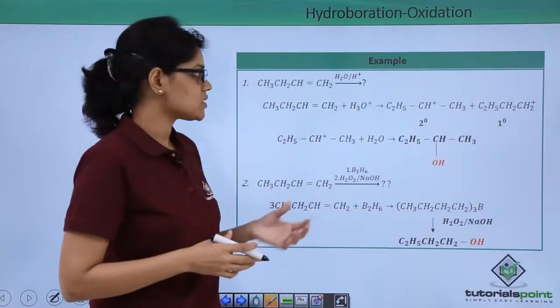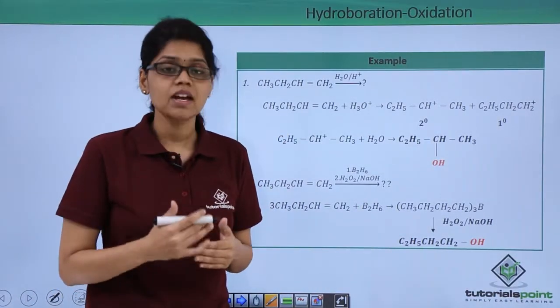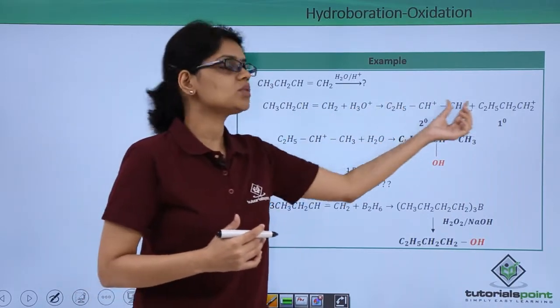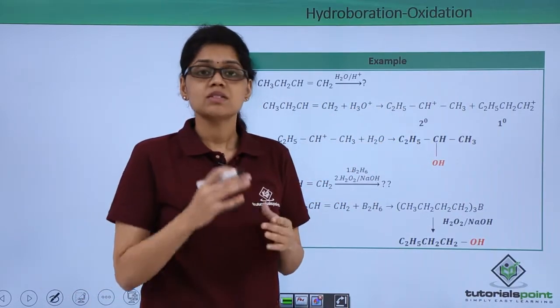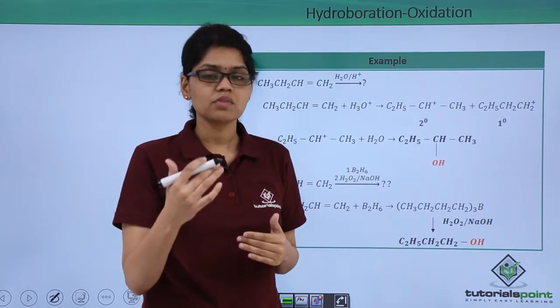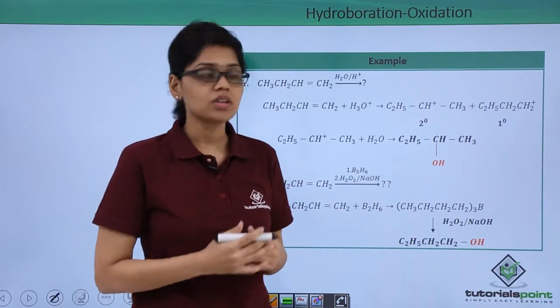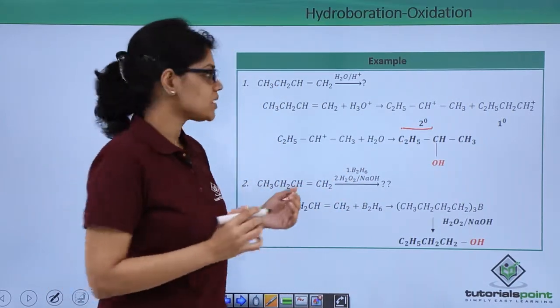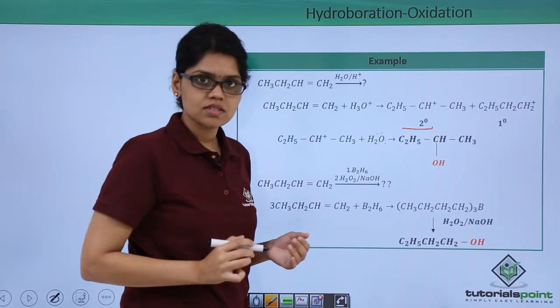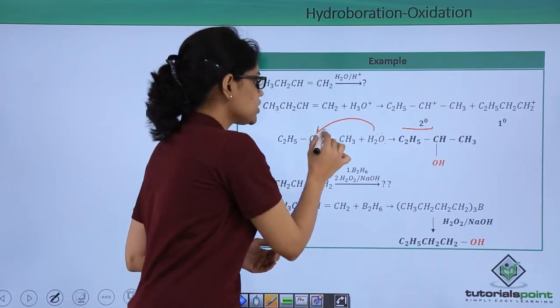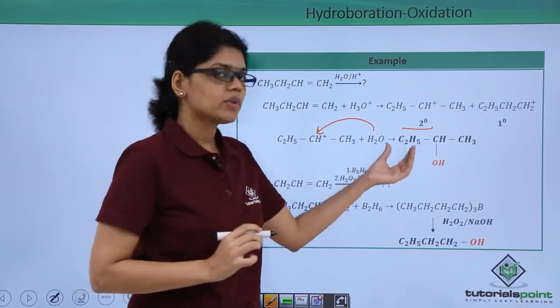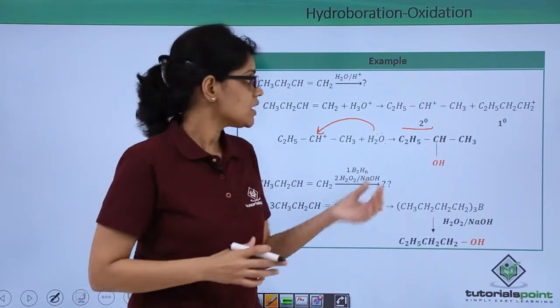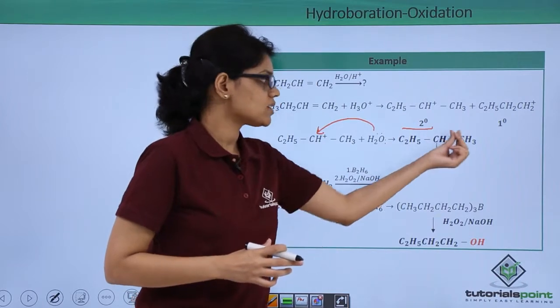In the first reaction, the alkene undergoes acid-catalyzed hydration where the first step is protonation of the double bond and it gives rise to two different carbocations. The major product will be obtained from that carbocation which is the most stable carbocation, in this case, which is the secondary carbocation. In the second step, the lone pair of electrons on the oxygen atom attacks this particular carbocation and with deprotonation in the last step, you get this as the final alcohol, which is C2H5CHOHCH3.